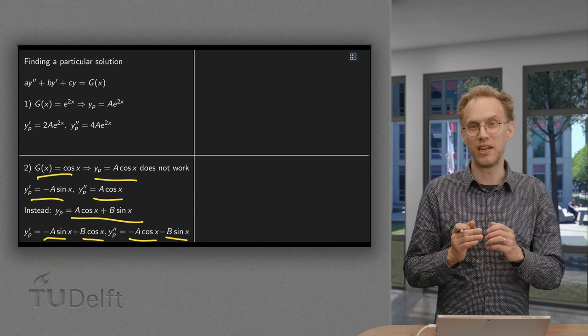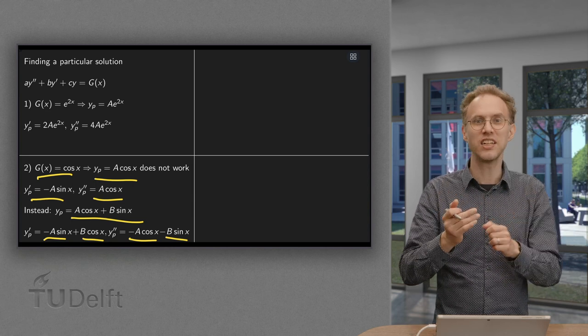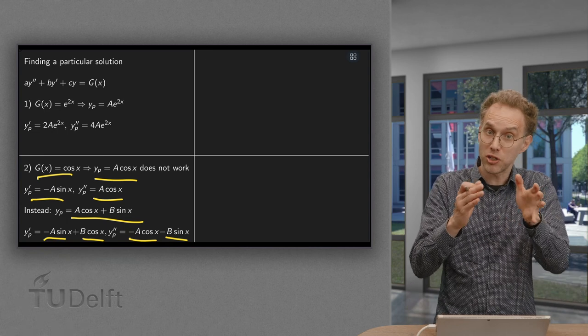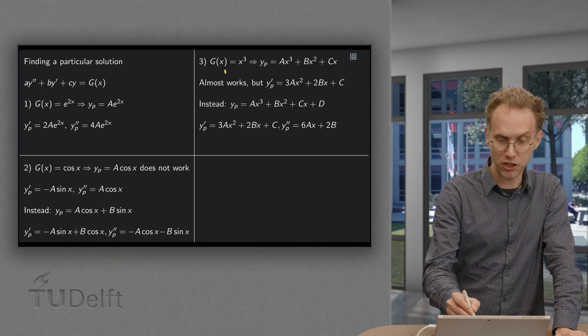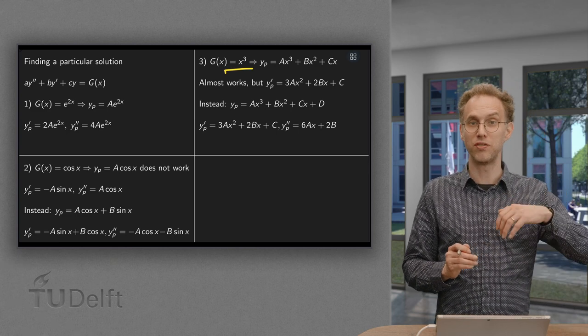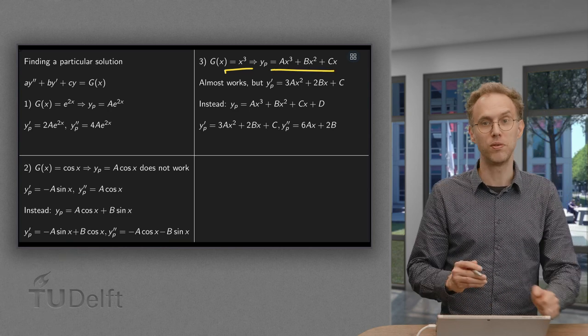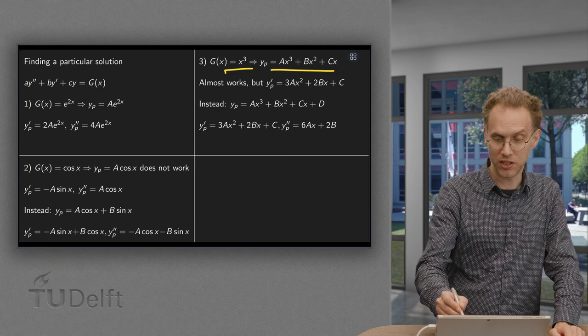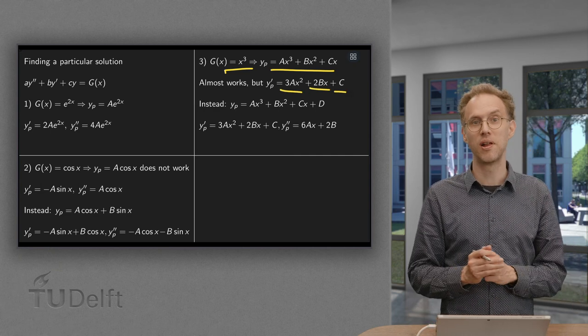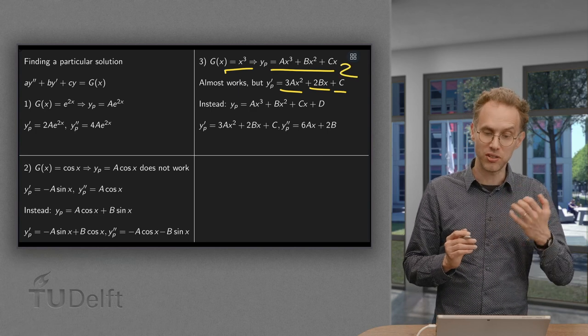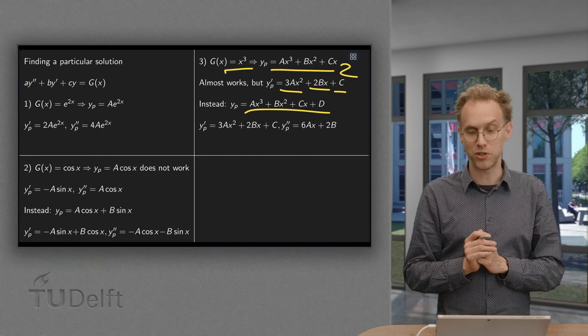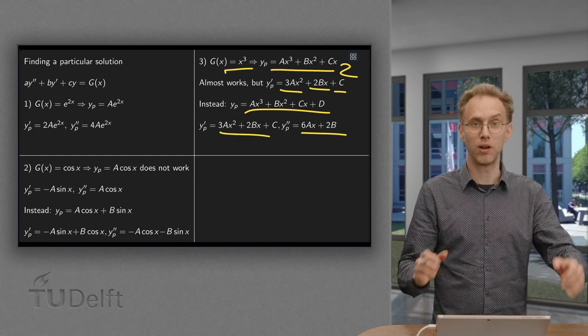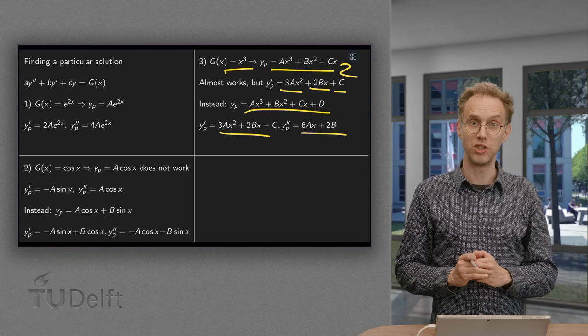So you see the game that you're playing. You look at the right-hand side. That gives your starting guess. And then you differentiate that to look ahead at what is going to happen if you plug it into your differential equation, and also include those terms. So what would you do, for example, if you have x³? Now if you differentiate it, you get terms with x² and x. So your guess would be Ax³ + Bx² + Cx as a particular solution. And this almost works. However, if you differentiate, you will get squares and linear terms, but also a constant, which you are still lacking in your particular solution. So then you think, okay, what I have to use instead is Ax³ + Bx² + Cx + D, a constant. And this is going to work because if you differentiate once and twice, you keep terms of the same form.